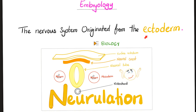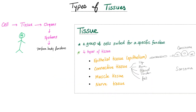Embryologically, the nervous system originates from the ectoderm. Types of tissue: there are four — epithelium, connective tissue, muscle tissue, and nerve tissue.